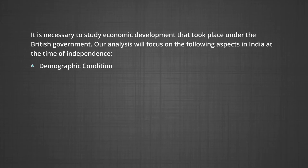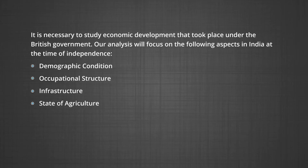The aspects are: demographic condition, occupational structure, infrastructure, state of agriculture, state of industry, and state of foreign trade during the British period. Let us come to the point of demographic condition during the British rule.